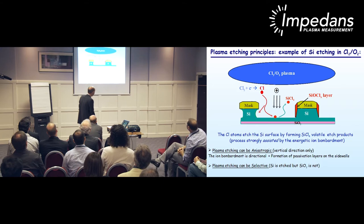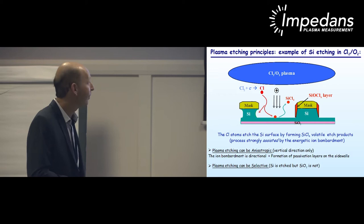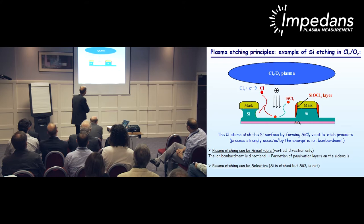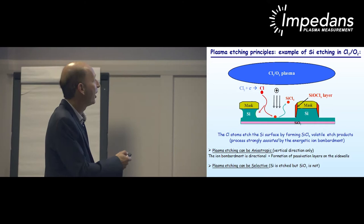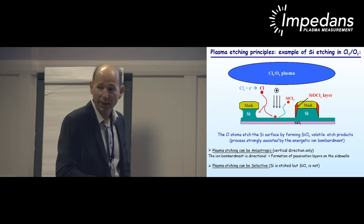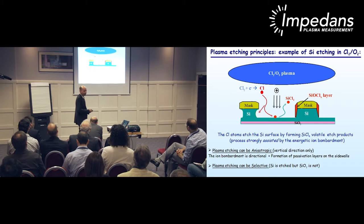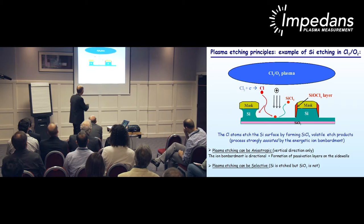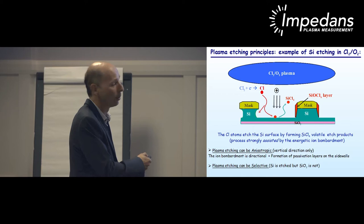This talk deals with plasma etching processes. I will start with a short introduction on etching. For example, if you take silicon etching in chlorine-oxygen plasmas, the chlorine atoms formed in the plasma are going to etch the silicon surface by forming SiCl4 volatile products that are pumped out of the chamber. This process is strongly assisted by energetic ion bombardment of the surface. Plasma etching is interesting because it can be anisotropic — etching goes in the vertical direction only — because the ion bombardment is directional and we adjust the plasma chemistry to form a passivation layer on the feature sidewalls, preventing lateral etching.